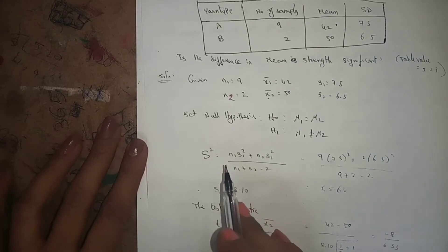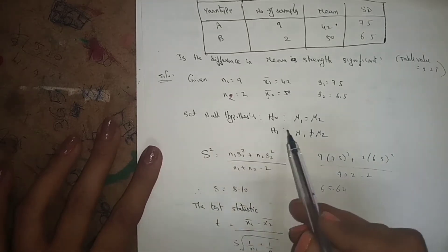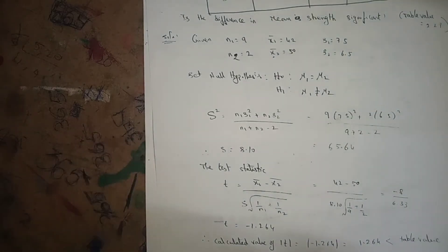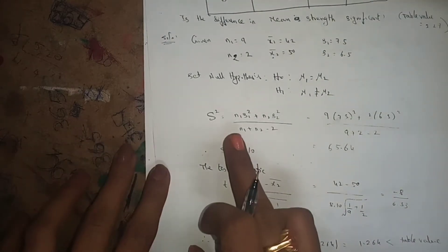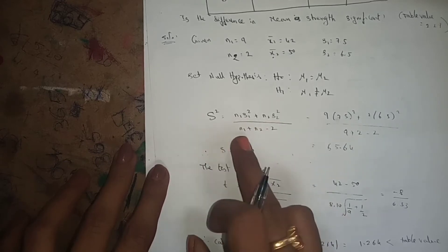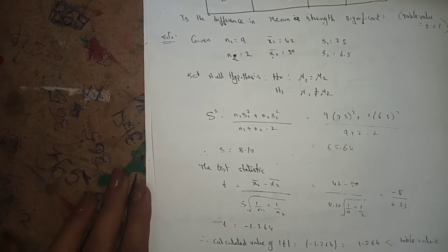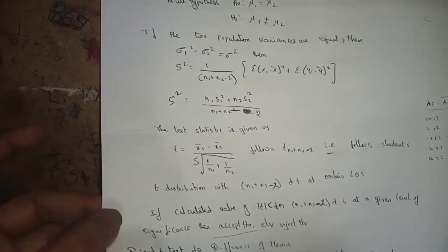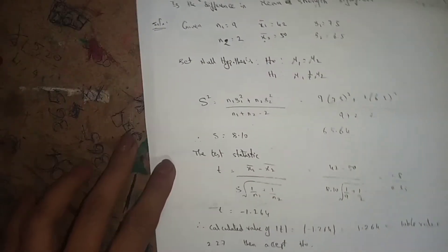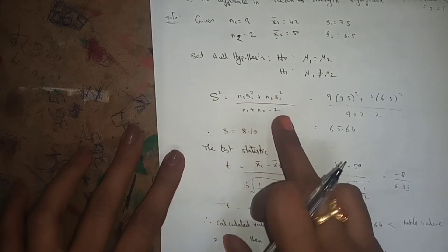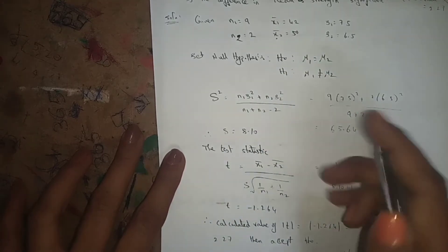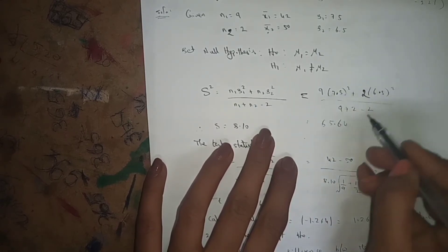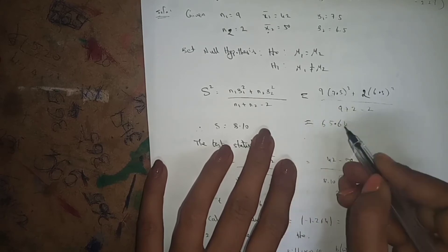Set null hypothesis H0: mu1 = mu2; alternative hypothesis H1: mu1 ≠ mu2. Using the formula s² = (n1·s1² + n2·s2²) / (n1 + n2 − 2), substituting all values and simplifying gives s² = 65.64.